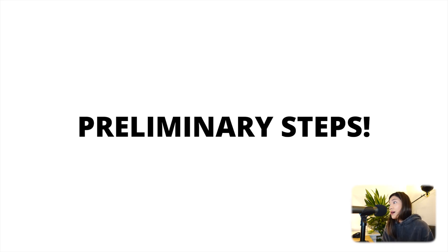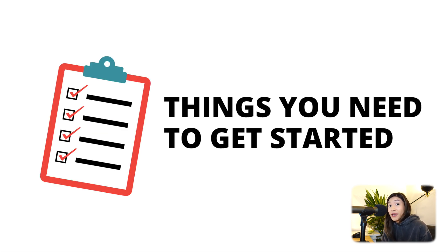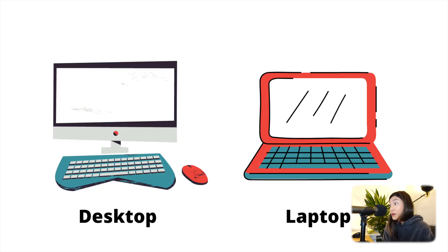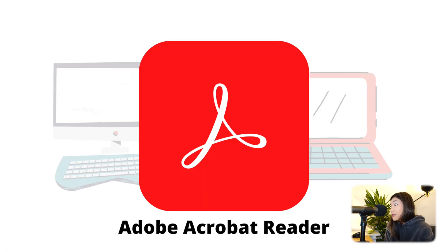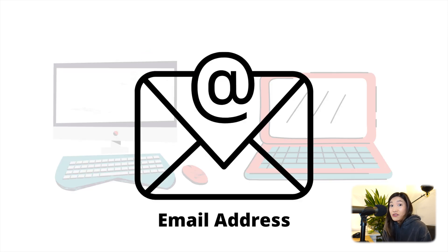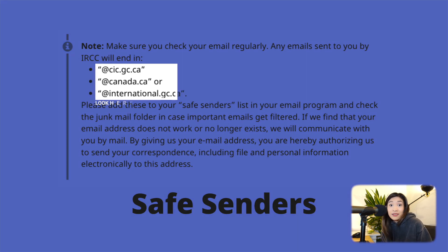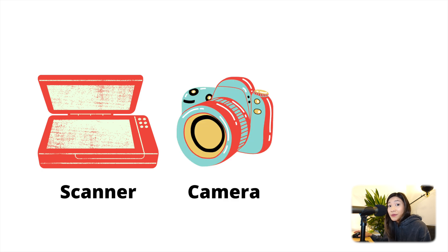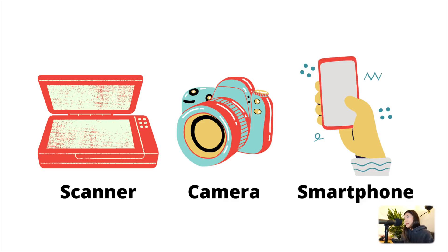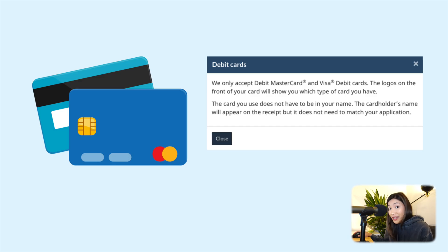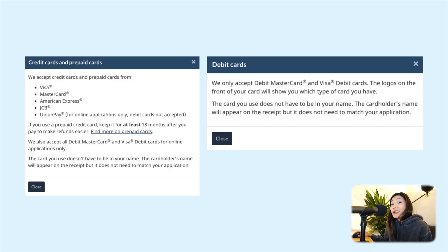Now, before I dive into the tutorial, we do need to go over some preliminary steps because you need the following items before you can start an application to IRCC. So they are: a computer or laptop with Adobe Acrobat Reader to view the application forms, an email address to receive application updates from IRCC — and make sure emails from IRCC are out of your junk inbox — a scanner or high-resolution camera or smartphone to submit digital copies of supporting documents, and finally, a debit or credit card to pay your application fees. And with that, let's now begin with the tutorial.